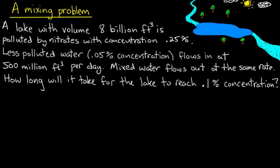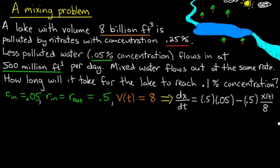The first thing to do will be to fit all this information into the model that we've derived for mixing problems. So first let's identify C_in, R_in, and R_out. Well, the concentration in is the concentration of the pollutant that's flowing in through this stream. And that's given as 0.05%. I'll use the units of % so I have 0.05 for C_in.